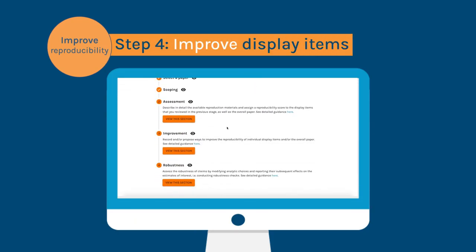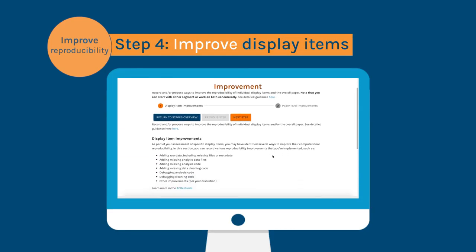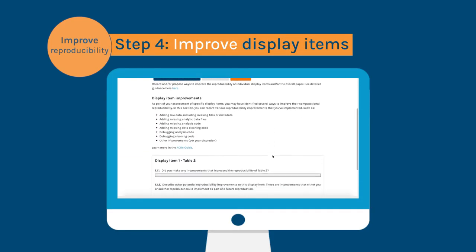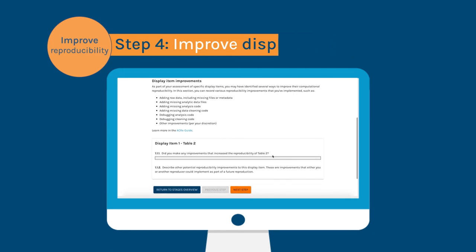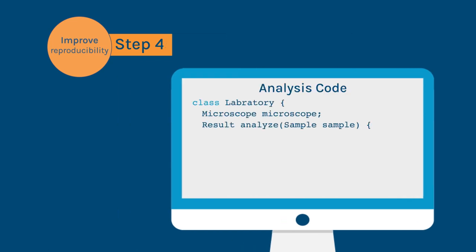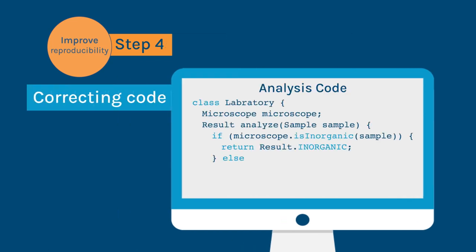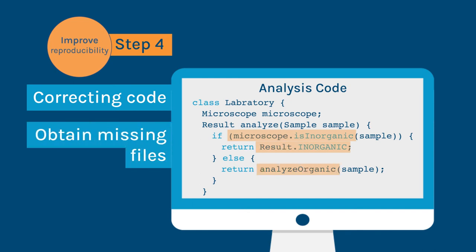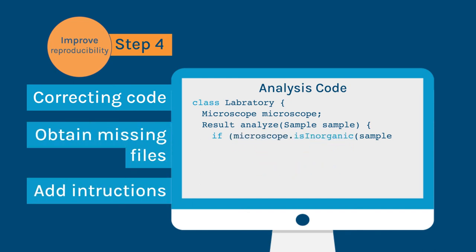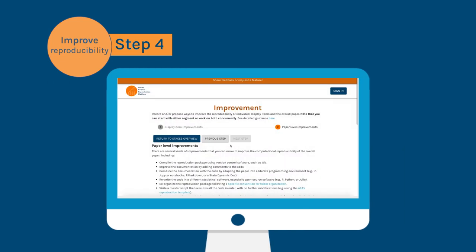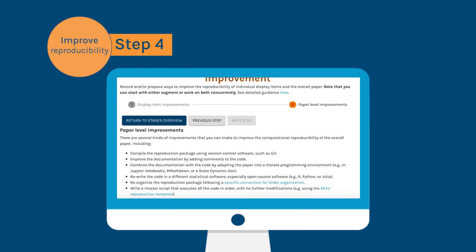Such updates can be implemented at the improvement stage, where reproducers attempt to make display items more reproducible. Better reproducibility can be achieved by correcting errors in the original code, obtaining missing data files, or adding instructions on how to access restricted data. Reproducers can also take steps to improve the reproducibility of the overall paper, such as rewriting scripts using open source software, or writing a master script file to reproduce the entire paper.